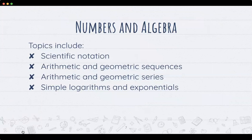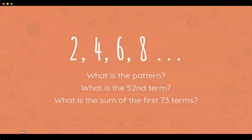In the numbers and algebra unit, we're going to talk about scientific notation, geometric and arithmetic sequences, geometric and arithmetic series, and simple logarithm and exponential equations. A typical problem would look something like: 2, 4, 6, 8... What's the pattern? What's the common difference? How is this changing? What's the 52nd term? What's the sum of the first 73 terms? That's the kind of thing we study in that unit.